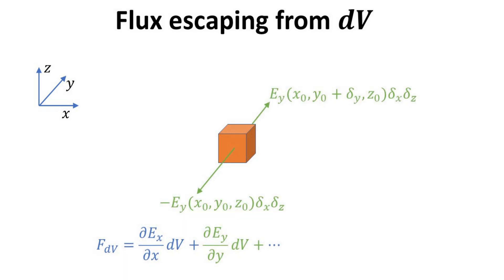Similar computation can also be performed for the surfaces pointing along plus minus y. Here, it is the Ey component of the electric field that is contributing to the flux. The sum of these two fluxes is the finite difference approximation to the differential of Ey with respect to y multiplied by the volume.